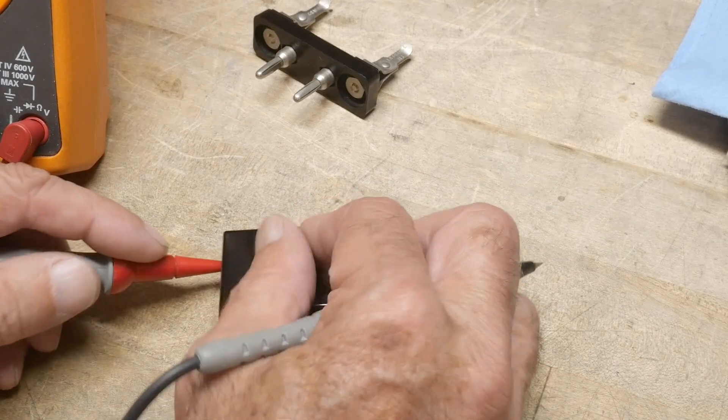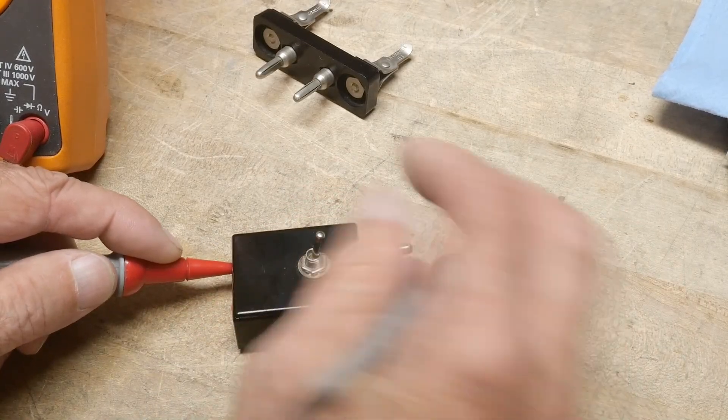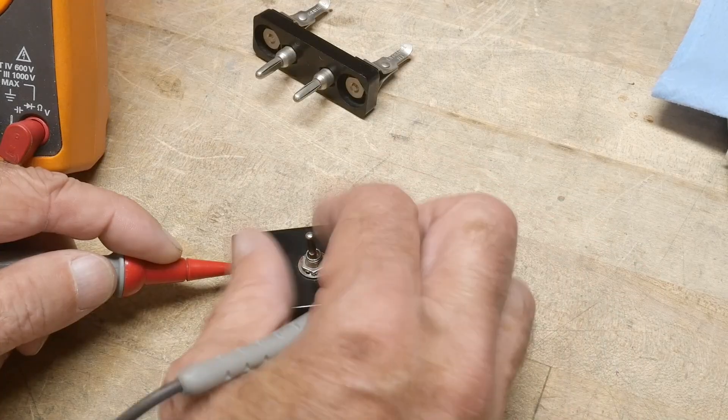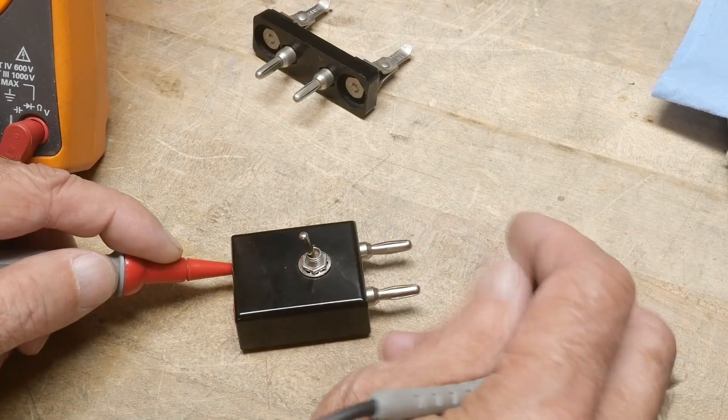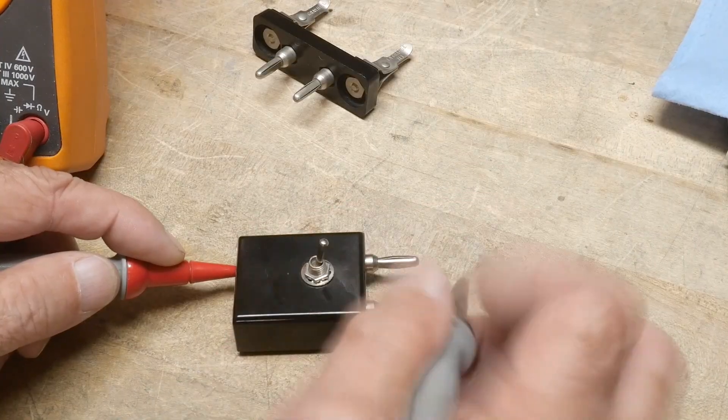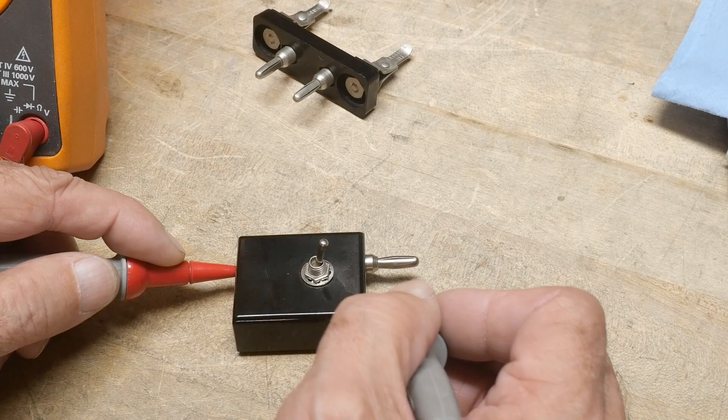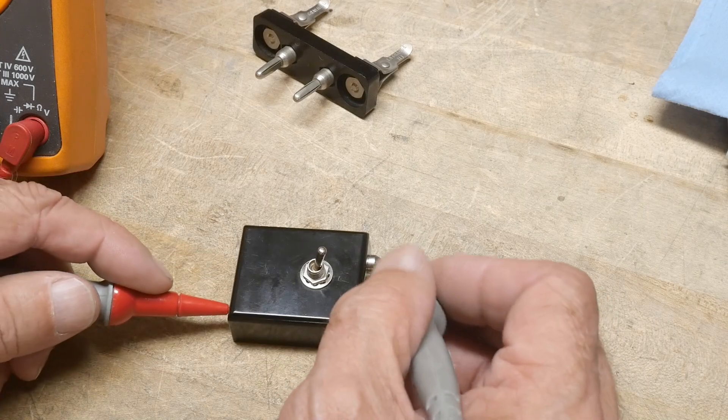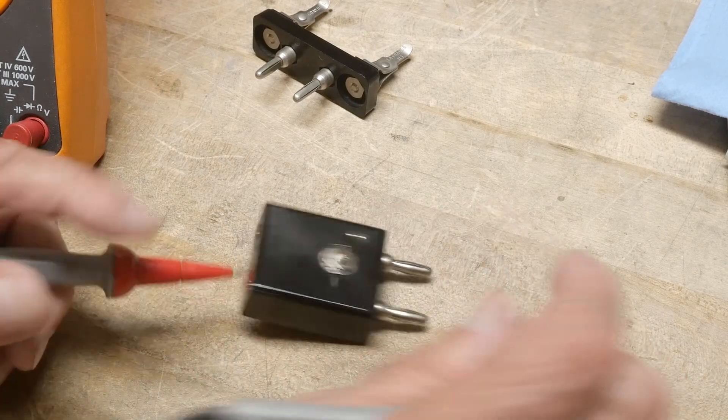All right, now how about over here? Ah, they're swapped over here. So it's one way swapped and nothing in the middle.